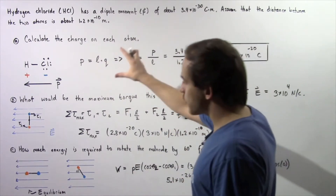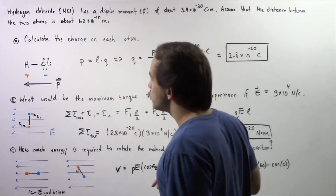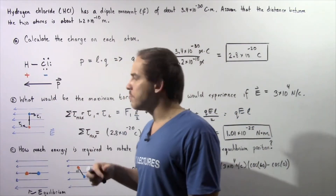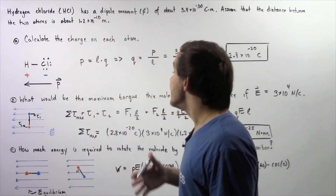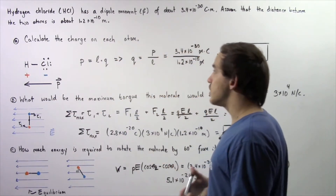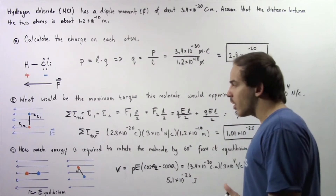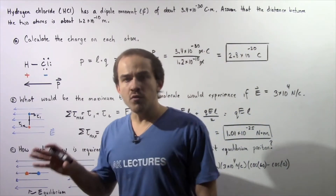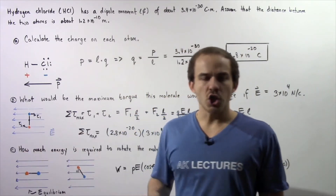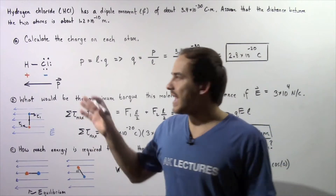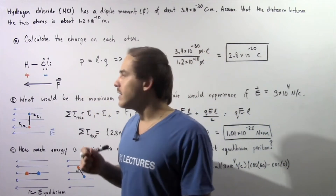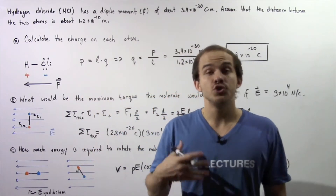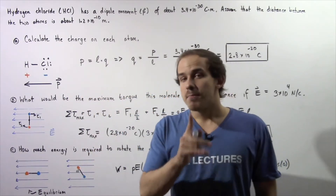We have three parts to this problem. Let's begin with Part A: calculate the electric charge on each atom. The overall charge on a single HCl molecule is zero — it's neutral.